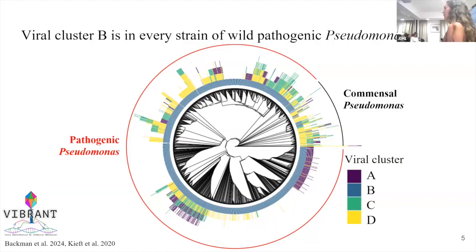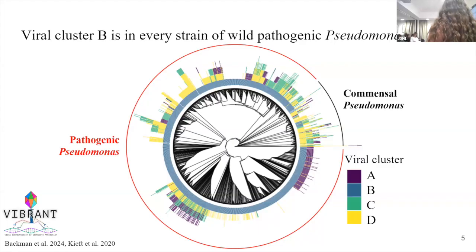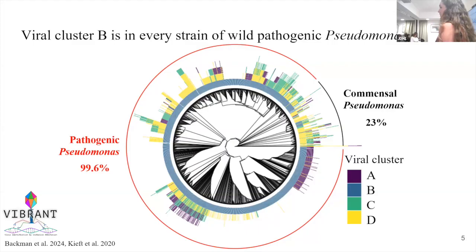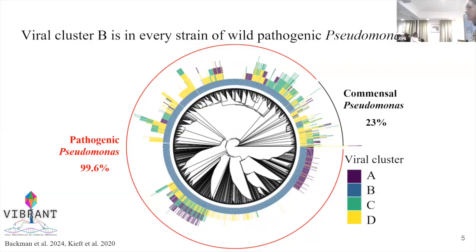We wanted to see if there were any patterns of specificity — is there a certain prophage or viral-like element contained in the genomes of pathogens versus commensals? We very quickly began to see that viral cluster B was present in every single strain of our pathogenic clade — the one it's missing from was a low-quality genome — but it was only present in a handful of commensal strains, and seems to be pretty divergent there.